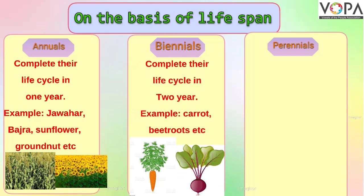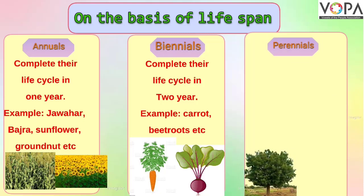Biennials: Plants like carrot and beetroot have a life cycle of two years — that means they grow and die in two years. During the first season, they prepare and store food, and in the second season they bear flowers, fruits, and seeds.